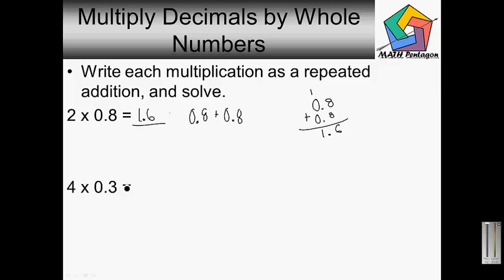Here we have 4 times 0.3. So we have 0.3 plus 0.3 plus 0.3 plus 0.3. Make sure you line up the decimal point. 3 plus 3 is 6, plus 3 is 9, plus another 3 is 12. Carry the 1. 1 plus 0 is 1. So my final answer is 1.2.